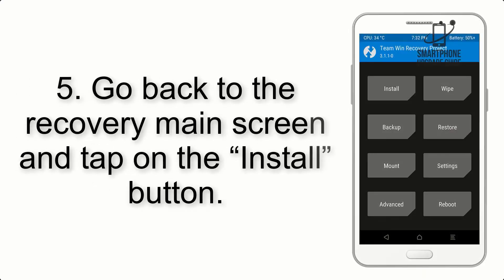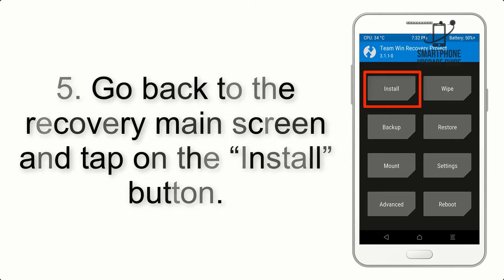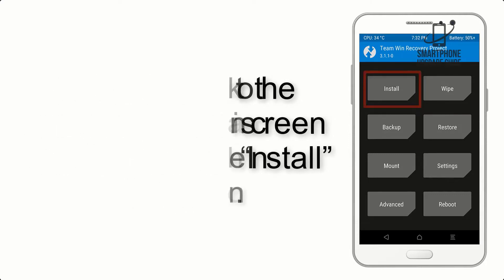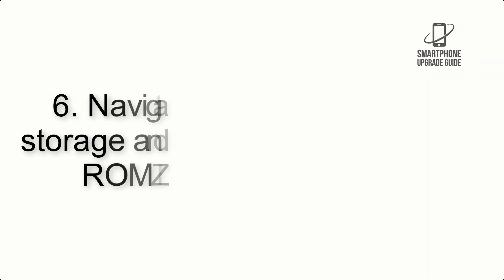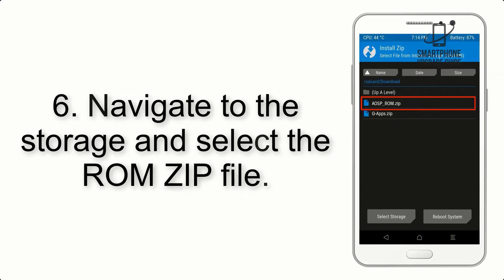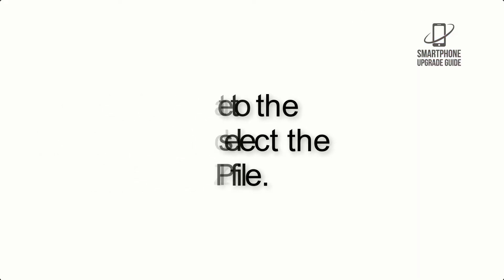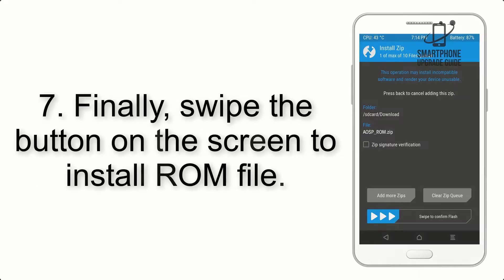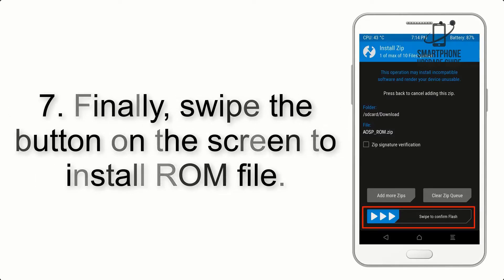Step 4: Swipe the button to wipe the device. Step 5: Go back to the recovery main screen and tap on the install button. Step 6: Navigate to the storage and select the ROM zip file.